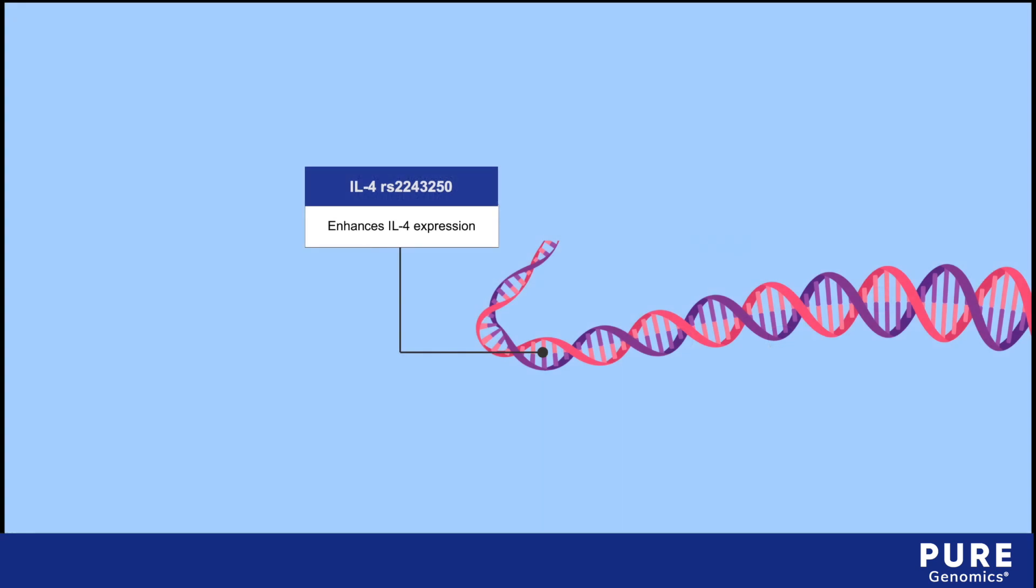A common SNP occurring in the promoter region enhances IL-4 gene transcription. This is a C-to-T transition occurring 590 base pairs upstream from the transcriptional start site. This transition makes the area stickier and better able to attract a transcription factor that stimulates gene expression.